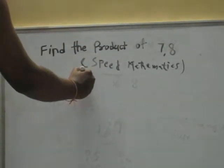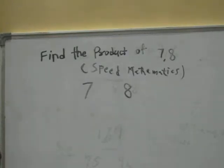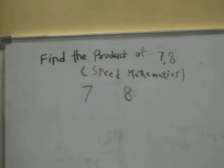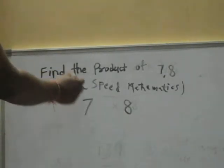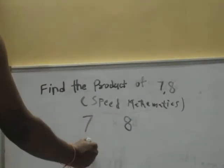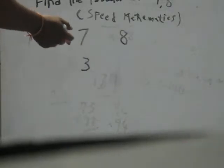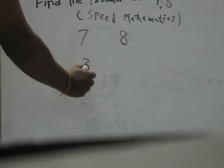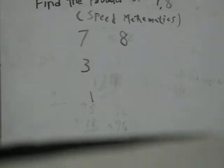Find the product of 7 and 8 in speed mathematics. First, take the two numbers 7 and 8 in the left side and right side. Now go for the half of the values till you get 1. So half of 7 is 3. Generally it is 3.5, but the remainder should be left, which is 1. Go for another half, 3 is 1. Leave the remainder.